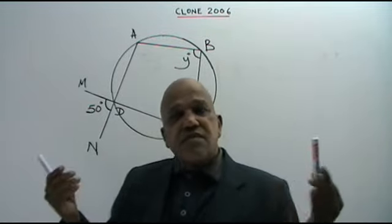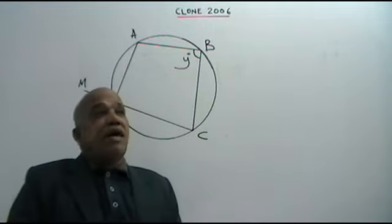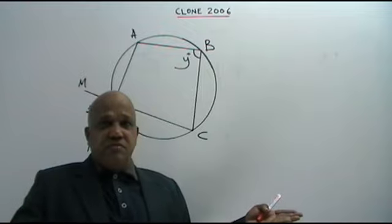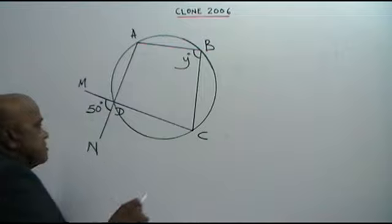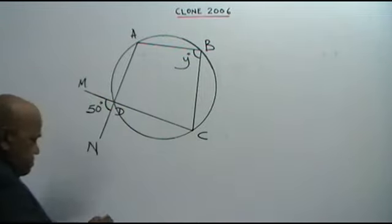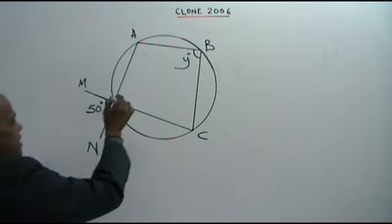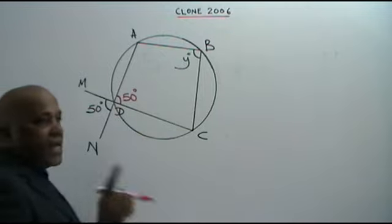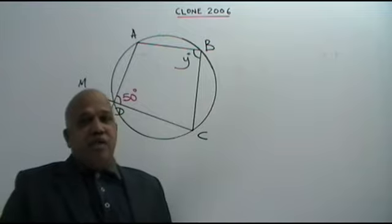Simply apply the circle theorems and angle theorems. The two lines cut each other, and where they intersect, the vertically opposite angles are equal.